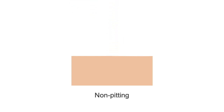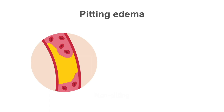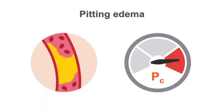Often the best place to perform this assessment is right over the tibia in the lower extremities. In pitting edema, this excess fluid in the interstitial space is usually due to venous occlusion or an elevated central venous pressure that has caused an increase in the capillary hydrostatic pressure.